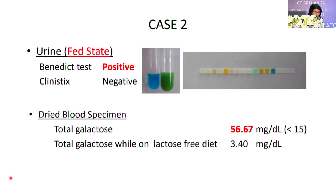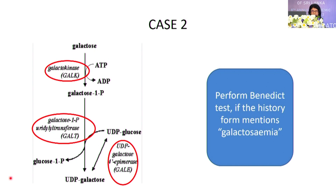As soon as they saw this report, they stopped breast milk and started a lactose-free diet, and the galactose levels became normal. If you issue the Clinitest as negative, the clinician may doubt the result. Please do the Benedict test first. There are three enzymes in the galactosemia pathway, and deficiency of any of them will elevate galactose levels. Sometimes both tests can be positive if the child develops Fanconi syndrome, where renal tubules are damaged and glucose also appears in the urine.